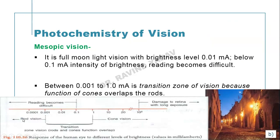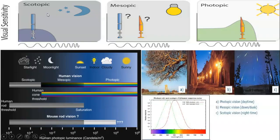Another terminology is mesopic vision — it is a full moonlight vision with a brightness level of 0.01 millilambert. In mesopic vision, reading becomes difficult due to the low brightness. So we have photopic vision for bright light, mesopic for moonlight, and scotopic for night vision.